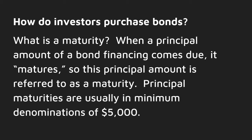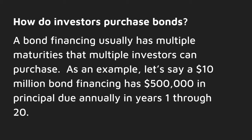What is a maturity? When a principal amount of a bond financing comes due, it matures, so this principal amount is referred to as a maturity. Principal maturities are usually in minimum denominations of $5,000. A bond financing usually has multiple maturities that multiple investors can purchase.